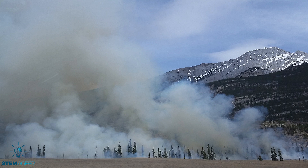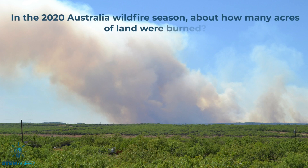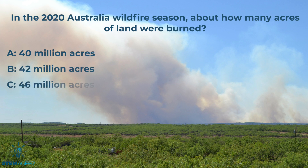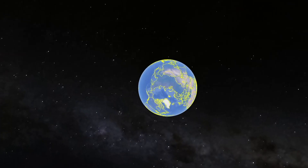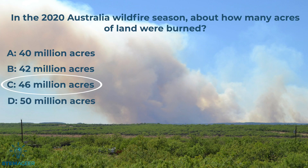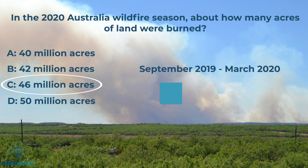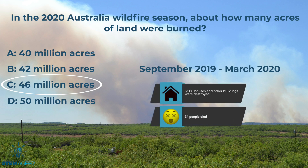So now you know all about wildfires. Let's test your knowledge with a quiz question. According to Disaster Philanthropy and the 2020 Australia wildfire season, about how many acres of land were burned? Is it A, 40 million acres? B, 42 million acres? C, 46 million acres? Or D, 50 million acres? The answer is C — 46 million acres. To put this in perspective, 46 million acres is just a little bit smaller than the country of Senegal in Africa. The 2020 Australia wildfire season ran from September 2019 to March 2020. During this time, more than 3,500 homes and other buildings were destroyed and over 34 people lost their lives.